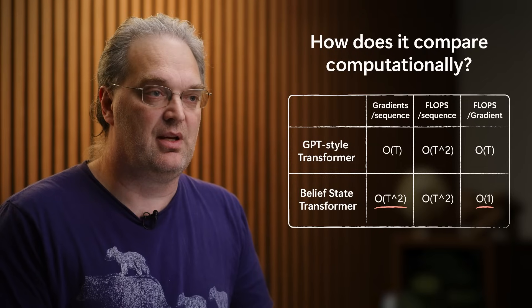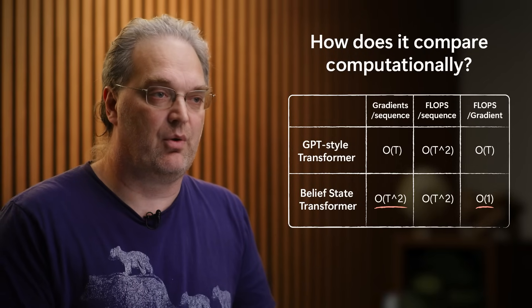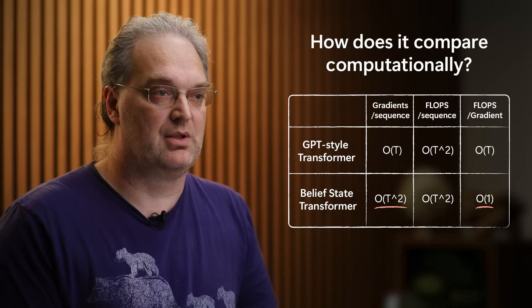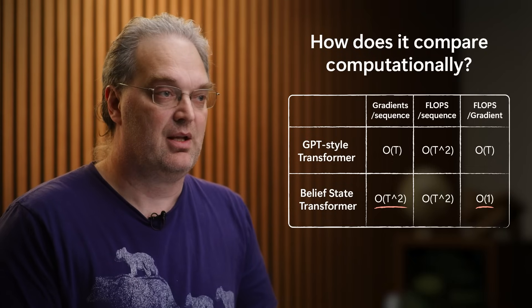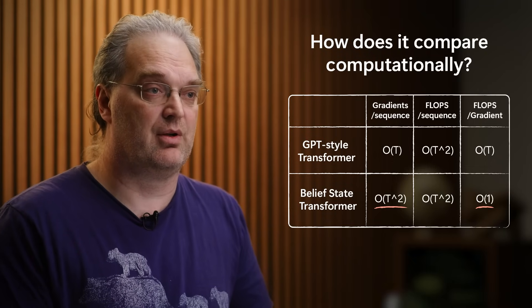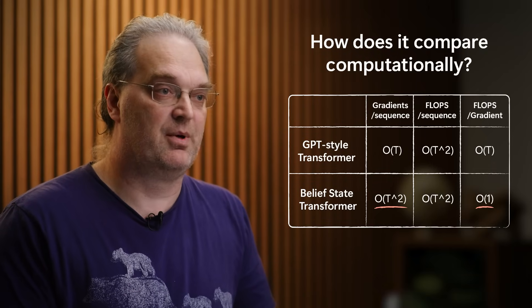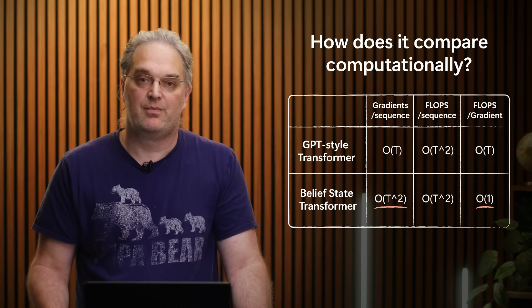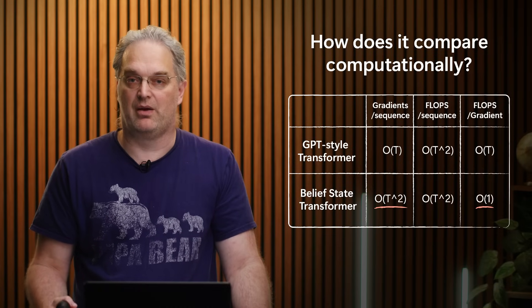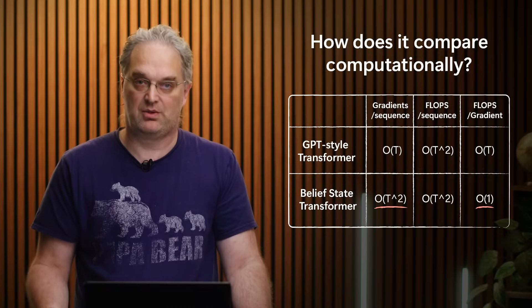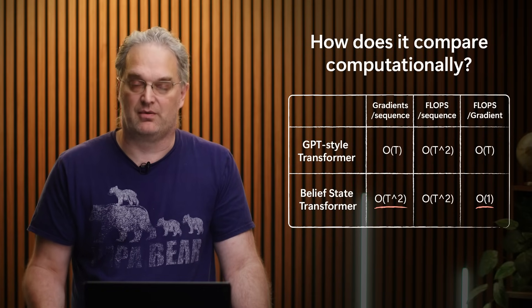Something to worry about with this architecture is the computation. The Belief State Transformer is obviously doing more computation, but it turns out this is only a constant factor more. In the forward encoder, just doing the attention used in a GPT-style transformer is already O(n²), since every token looks at every previous token. In the Belief State Transformer, that happens twice — you have two transformers each with their own attention — so you pay a factor of two.